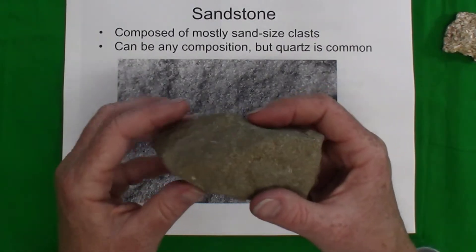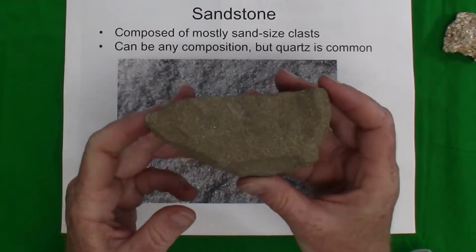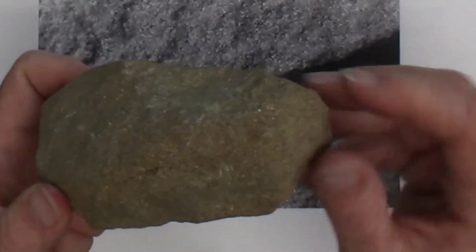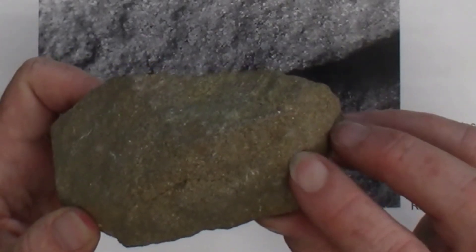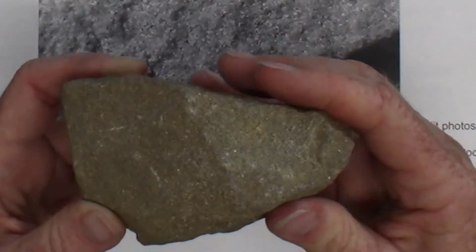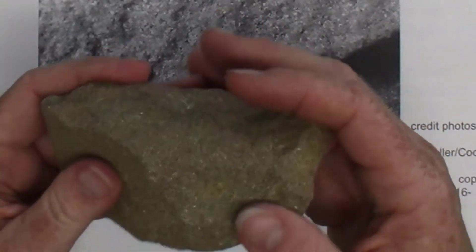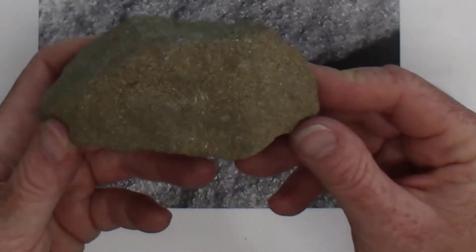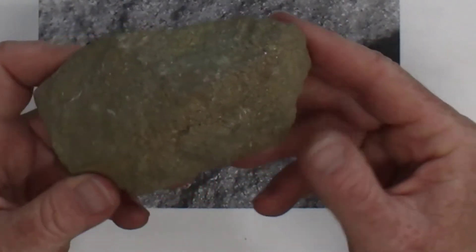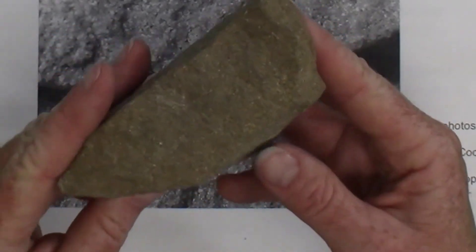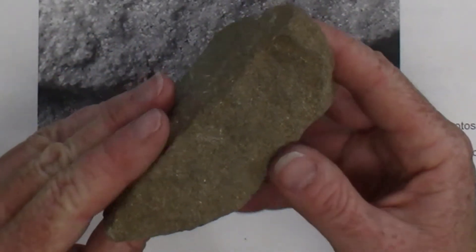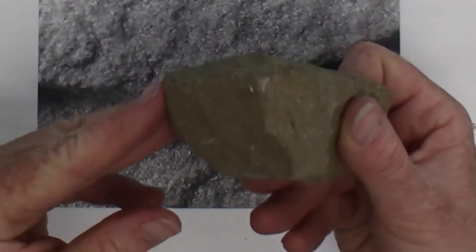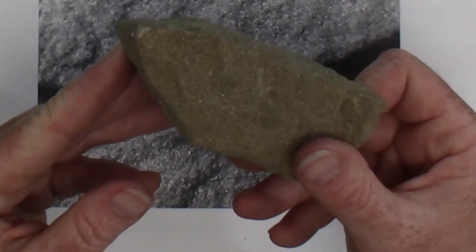If the rock is clastic and composed mostly of sand-sized grains, we can see some of the particles if we look closely with a hand lens. The rock overall feels like sandpaper because of the rough texture of the sand grains. The composition of the sand grains can be anything — quartz is quite common because it is chemically stable, so as the sediment is transported, quartz doesn't change; it just becomes smaller and more rounded.